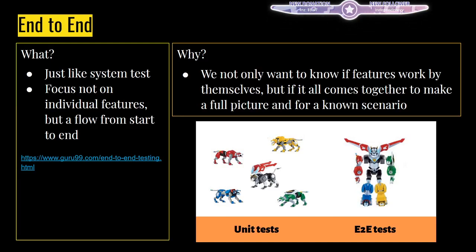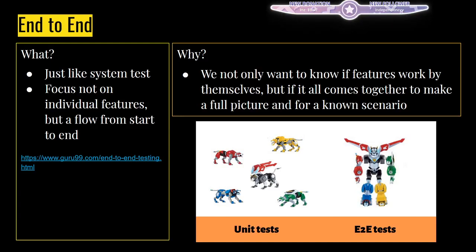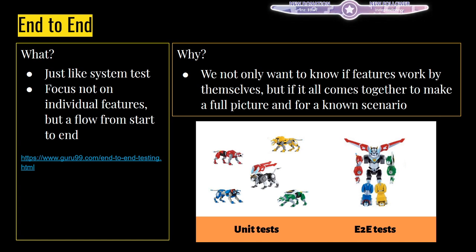Running the whole thing through a flow compared to running individual steps not in the flow is a real difference. End-to-end is therefore often called from a UI side, because UI is the best way to show an actual flow. You basically interact with the UI in order to verify if UI and data behaves as expected.